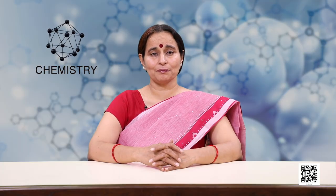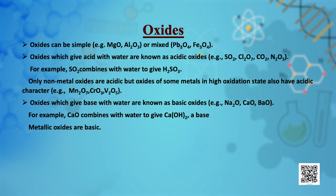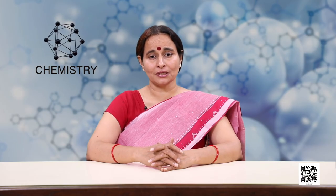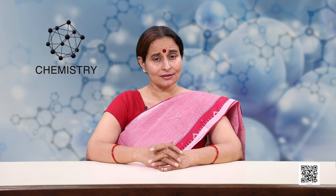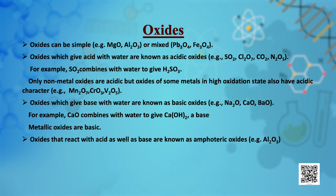Oxides which give a base with water are known as basic oxides — for example, calcium oxide combines with water to give calcium hydroxide, a base. In general, metallic oxides are basic. Some metallic oxides exhibit dual behaviour, showing characteristics of both acidic and basic oxides; such oxides are known as amphoteric oxides, and they react with both acids and alkalis.